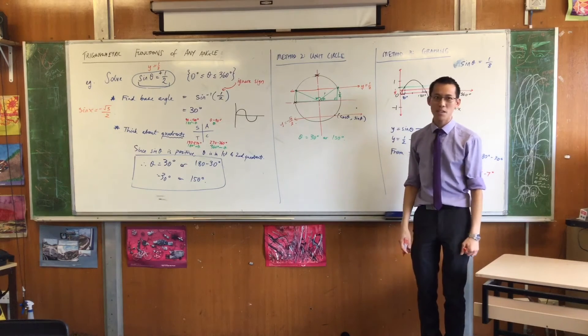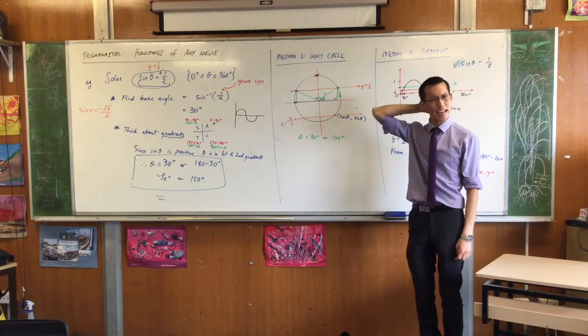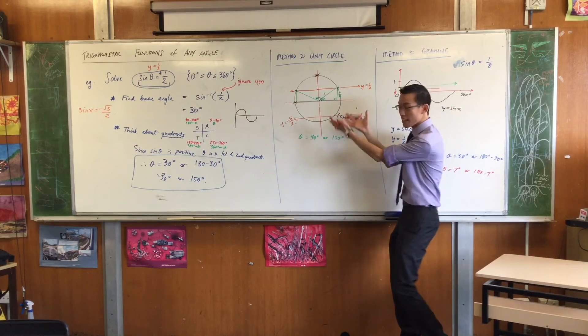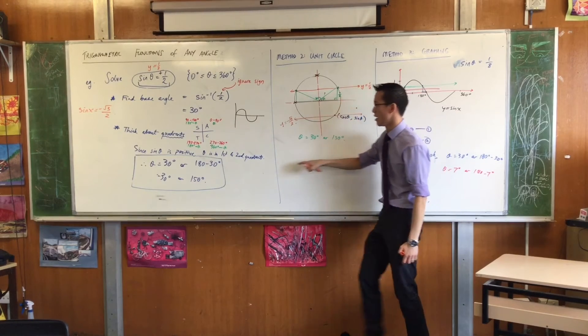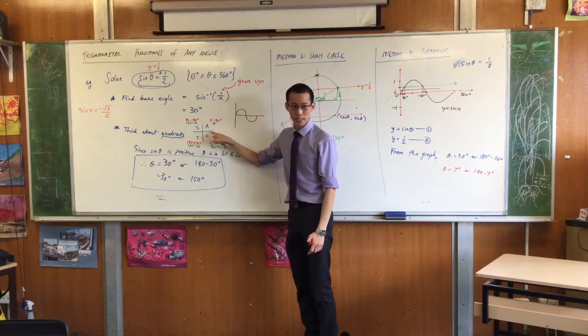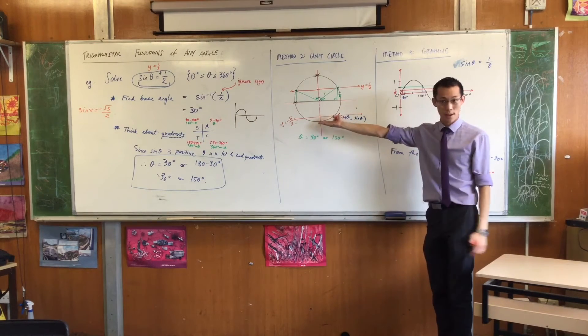Do you see, I don't need to think about ASTC or anything like that, and which quadrants have negative sine or anything like that? The circle just takes care of it for me.